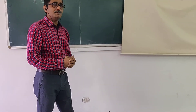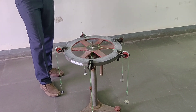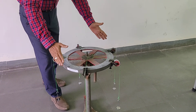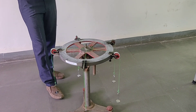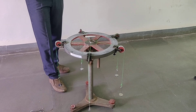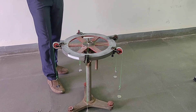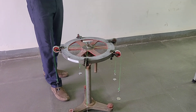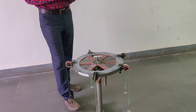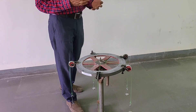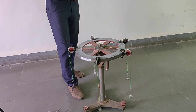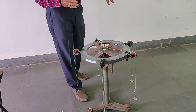We are conducting this experiment on this universal force table. This apparatus is known as a universal force table. The reason it is called universal is that by using this apparatus we can verify the different laws used in mechanics — we can verify the triangle law, the polygon law of forces, as well as the Lami's theorem. Since we can verify a number of experiments on this apparatus, that is why it is known as a universal force table.